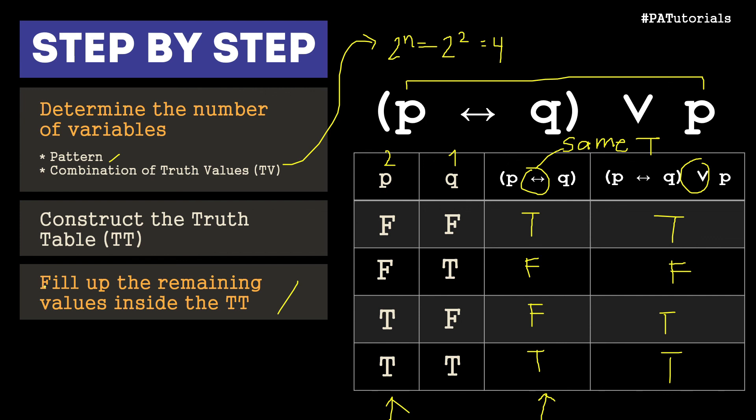Just a recap: we have three steps — first, determine the number of variables, which also tells you the pattern and combination of truth values; second, construct the truth table itself; and third, fill up the remaining values inside the truth table from simple expression down to the more complex expression. This was the easy version, and I'll be making an intermediate or more complex version linked down below. Thanks for watching, and please like and subscribe to my channel. Bye!